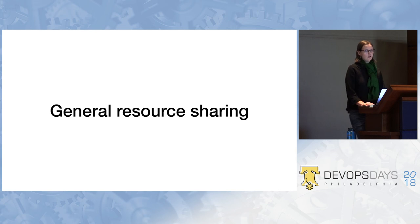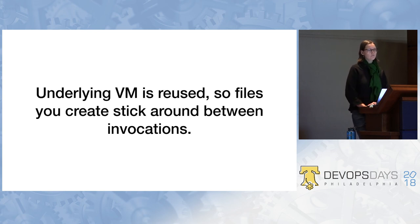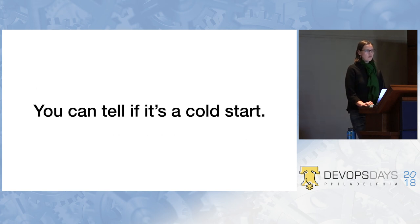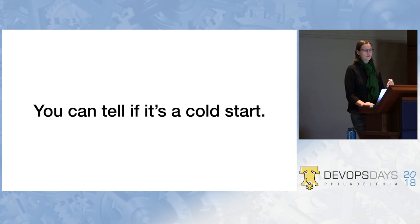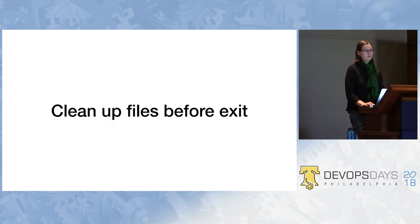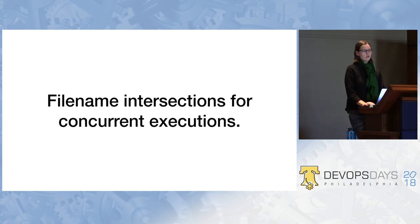With serverless there are a couple other interesting notes. Because the underlying VM is reused, files that you create stick around between invocations unless you get a cold Lambda. If you create a file in a specific place every time, and it's already there, you know it's a hot Lambda — useful for performance metrics. It also means you really have to clean up your files before you exit, otherwise you start to fill the drive and are relying on AWS to delete them. And you have to be careful because file names can intersect, and resources don't do well with multiple processes talking about the same file.